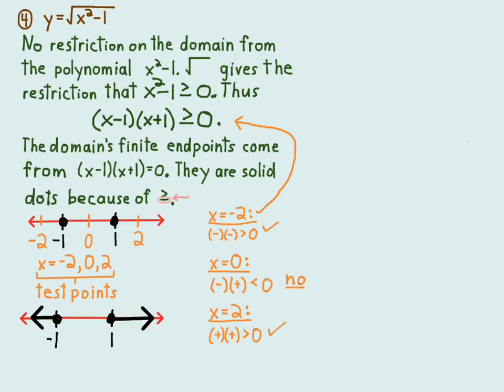You just shade those in. Usually you do it on the same number line; I'm just doing it on a separate number line so that you can see what's going on. Now you just have to write this in interval notation: negative infinity comma negative one close bracket, union, open bracket one comma infinity.